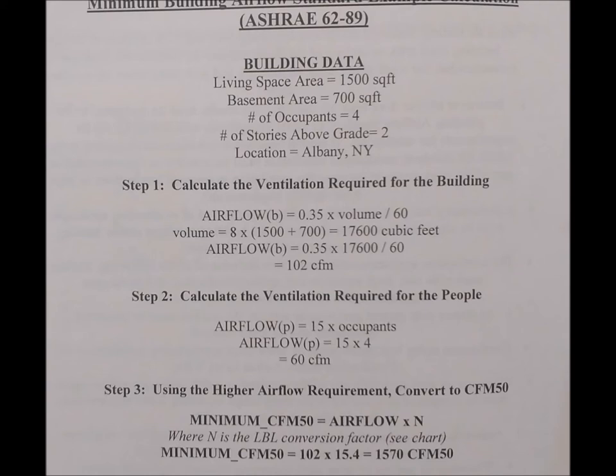Step 3: Using the higher airflow requirements, convert to CFM50. Minimum CFM50 equals airflow times N, where N is the LBL conversion factor on the chart. For Albany, New York, which is Zone 2, the factor is 17 to 20. The minimum CFM50 equals 102 times 15.4 equals 1,570 CFM at 50 pascals.